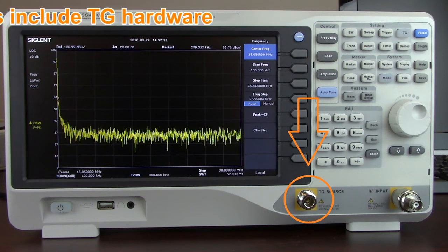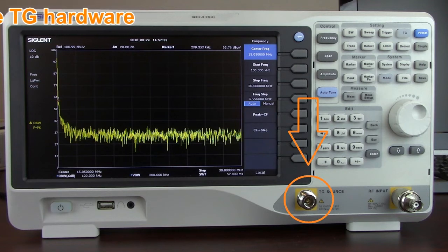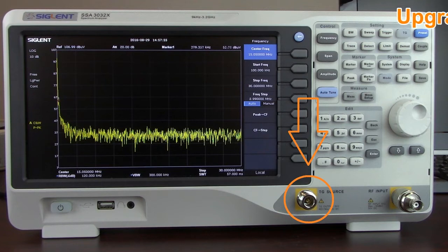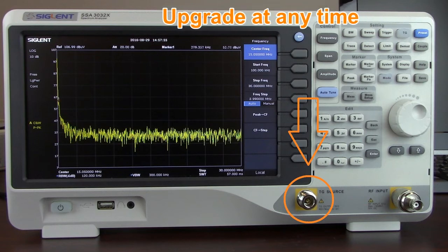If you do purchase a unit without the TG option enabled, your upgrade is available at any time. Again, to activate the TG option on the Siglent SSA 3000X, all you have to do is call your nearest Siglent office or distributor, purchase the option, and enter the license key.